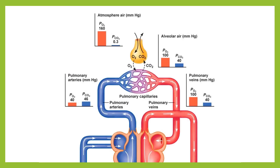Looking at the diagram: the atmospheric air has a partial pressure of oxygen of 160 millimetres of mercury and carbon dioxide of 0.3. But once we breathe that air in, it mingles and mixes with the air already in the lungs, whose proportions are somewhat different to atmospheric air. Once mixed, we're left with alveolar air where the partial pressure of oxygen is about 100 millimetres of mercury — a somewhat smaller proportion overall — and the proportion of carbon dioxide has shot up significantly compared to atmospheric air.